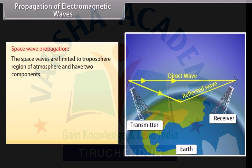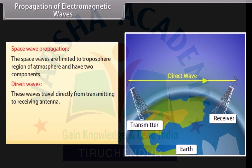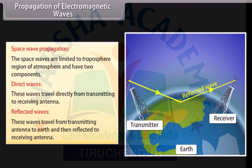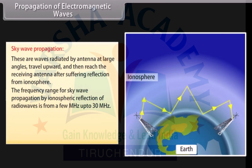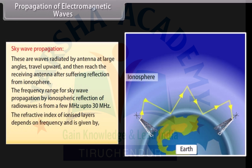Space waves are limited to the troposphere region of the atmosphere and have two components: direct waves, which travel directly from transmitting to receiving antenna, and reflected waves, which travel from the transmitting antenna to Earth and are then reflected to the receiving antenna. Sky waves are radiated by antenna at large angles, travel upward, and then reach the receiving antenna after suffering reflection from the ionosphere. The frequency range for sky wave propagation is from a few megahertz up to 30 megahertz. The refractive index of ionized layers is given by: n = √(1 − 81/F²).